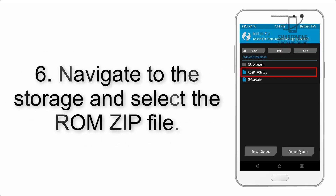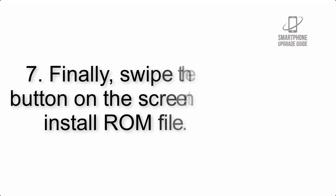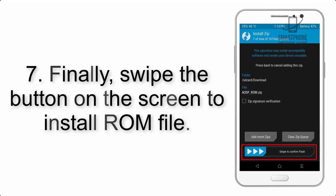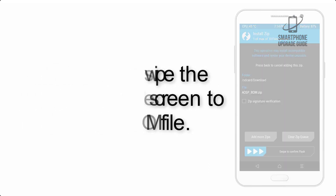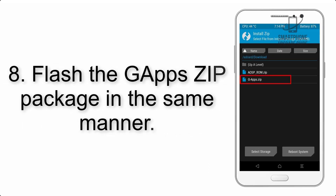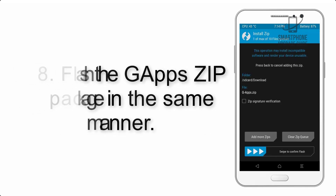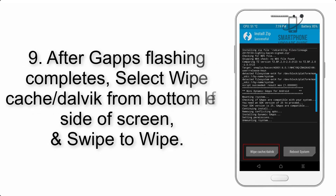Step 5: Go back to the recovery main screen and tap on the Install button. Step 6: Navigate to the storage and select the ROM zip file. Step 7: Finally, swipe the button on the screen to install the ROM file. Step 8: Flash the GApps zip package in the same manner.